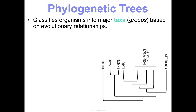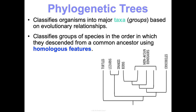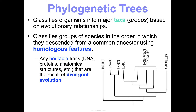These trees classify groups of organisms into major taxa — just groups — based on evolutionary relationships. They classify groups of species in the order in which they descended from a common ancestor, looking for homologous features: shared heritable DNA, proteins, anatomical structures, etc., that could have been the result of divergent evolution to produce these homologous features.